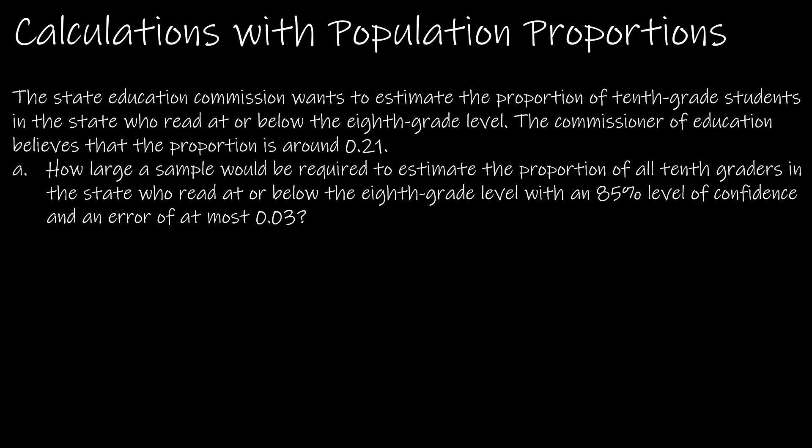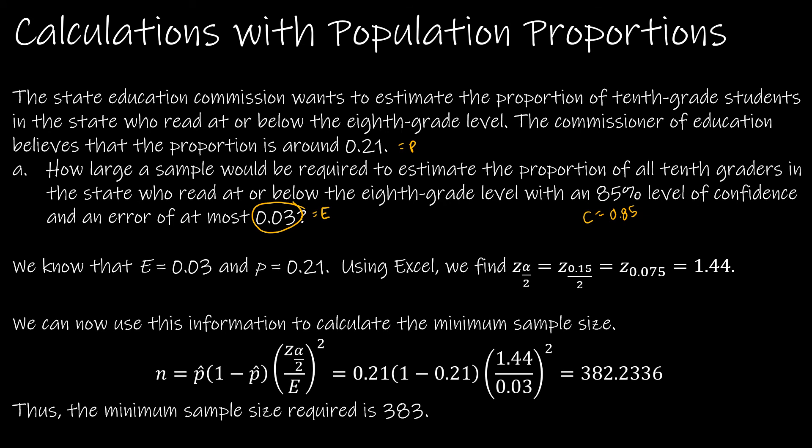For the first question, what we're looking for is how large of a sample. We're going to plug in what we know. The margin of error or E is going to be 0.03, C is 0.85, and p is 0.21. Using Excel to find the critical value using the 85% level of confidence, we find 1.44. Then plugging it into that equation we get 382.23. Because we're dealing with sample size, we always round up, so the minimum sample size is 383.